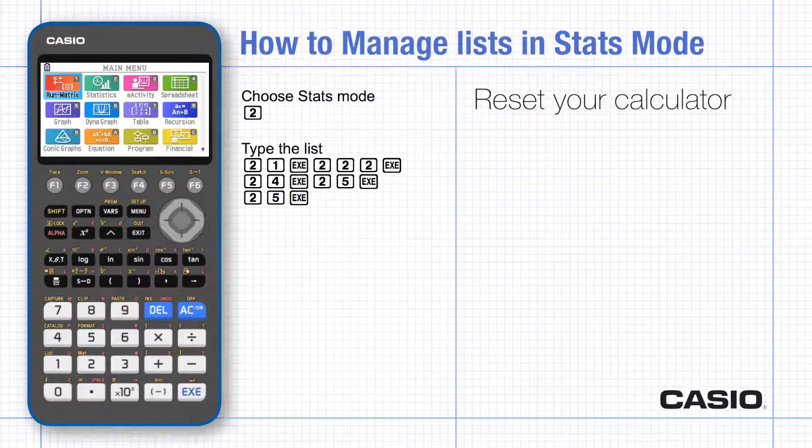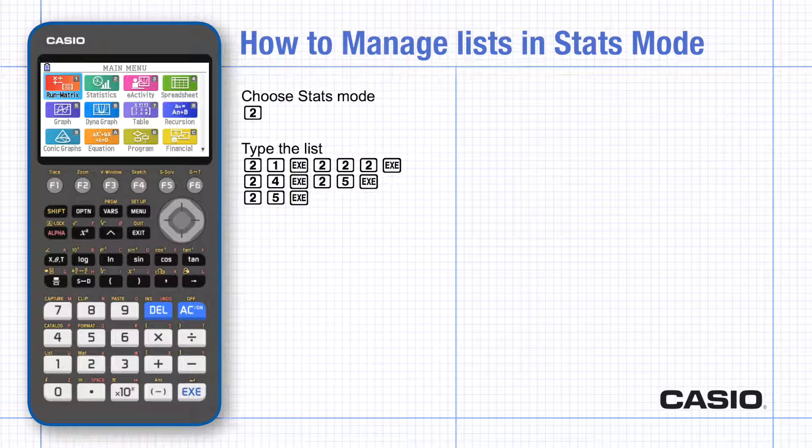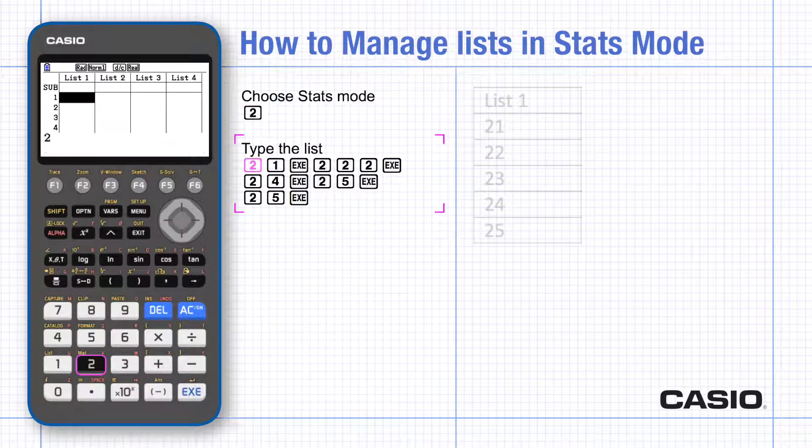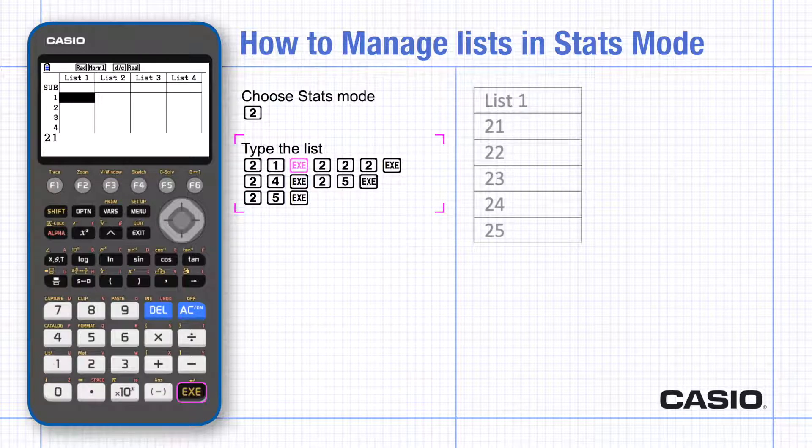I'm going to type the first list with errors in it to show you how to correct them. It's always a useful thing to know. Choose stats mode and type in your data. Each time you press execute, the cursor moves down ready for the next value.